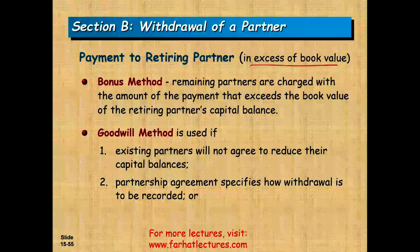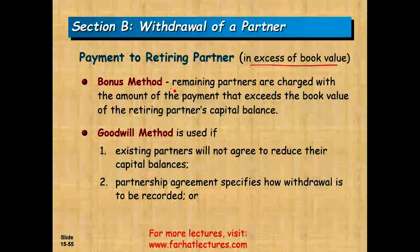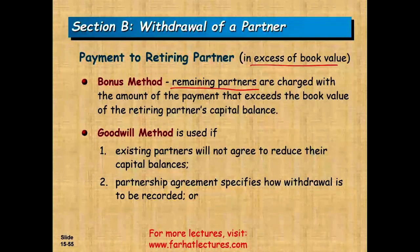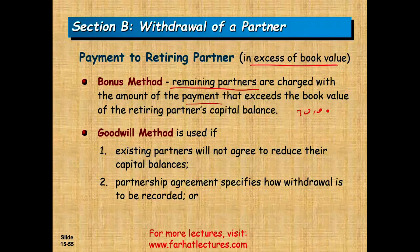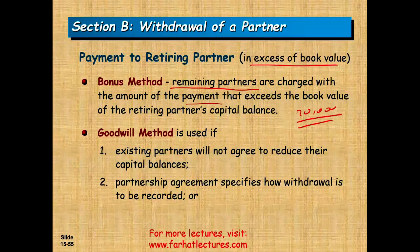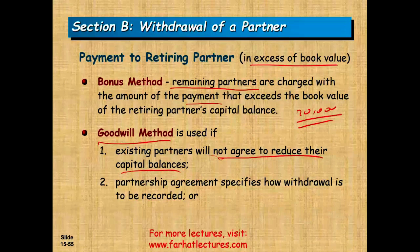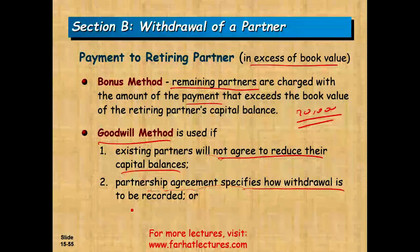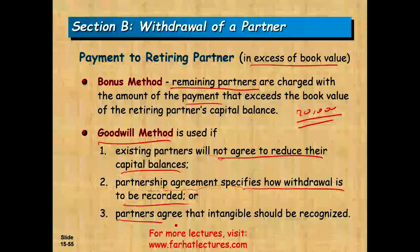What is the bonus method? The remaining partners are charged with the amount that exceeds the book value of the retiring partner. So if we paid $20,000 more, the remaining partners will absorb this loss. Under the goodwill method, the existing partners will not agree to reduce their capital balance. The partnership agreement specifies how withdrawal is recorded, or partners agree that intangibles should be recognized. We have more than one option depending on what they agreed upon — they may reduce it or they may not.